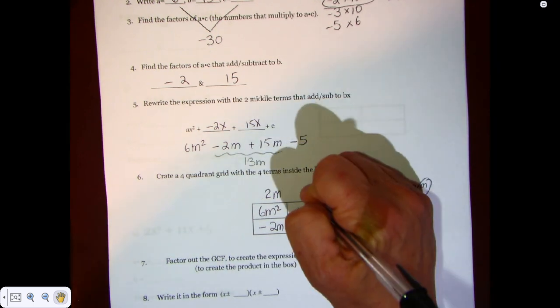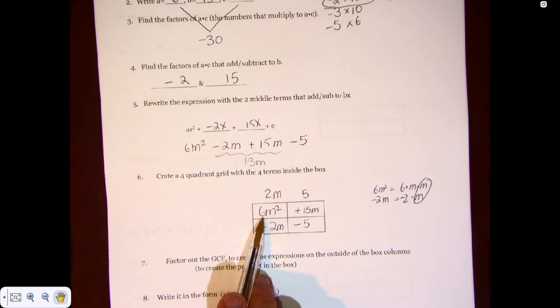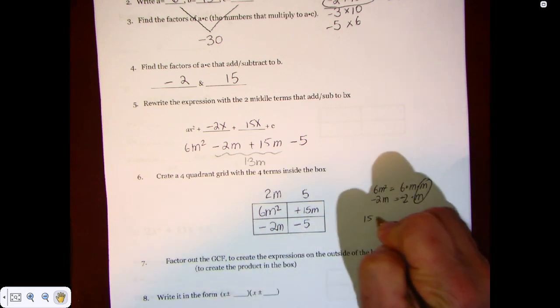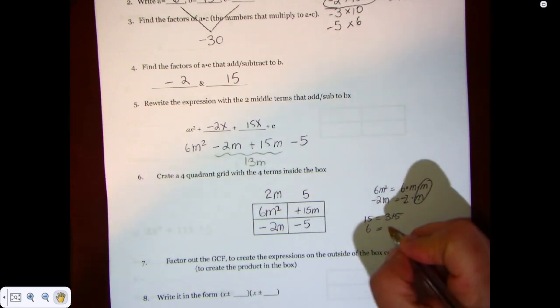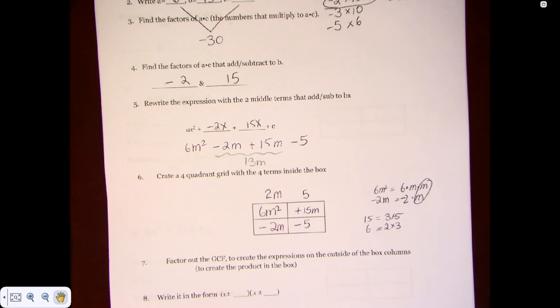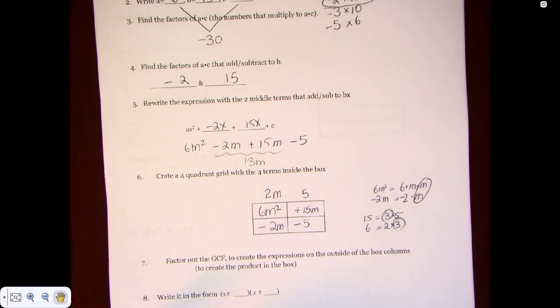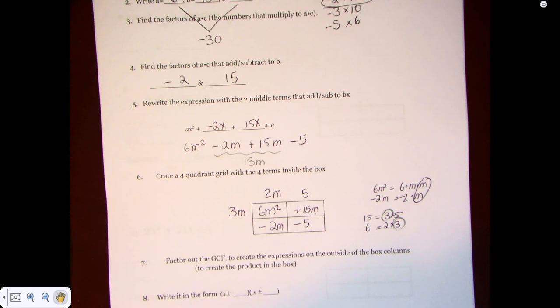But looking at this column over here, what do we have in common? We have a 5. Let's look at the rows. We want to multiply. So we get 6m. We know 6m squared and 15m. What do they have in common? Well, 15 is equal to 3 times 5, and 6 is equal to 2 times 3. The greatest common factor they have in common are the 3s. So we end up with a 3 and an m because they both have m in common.